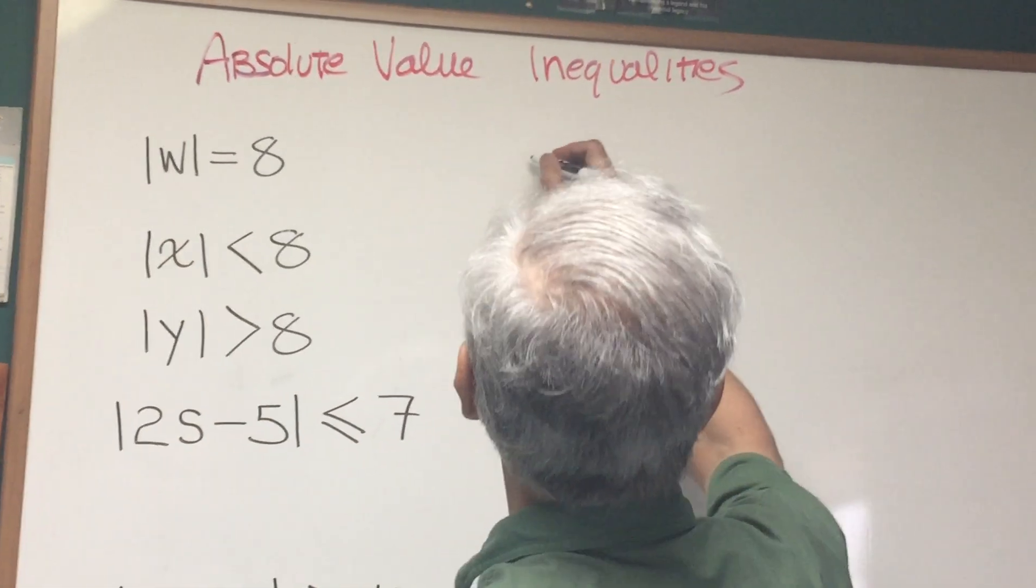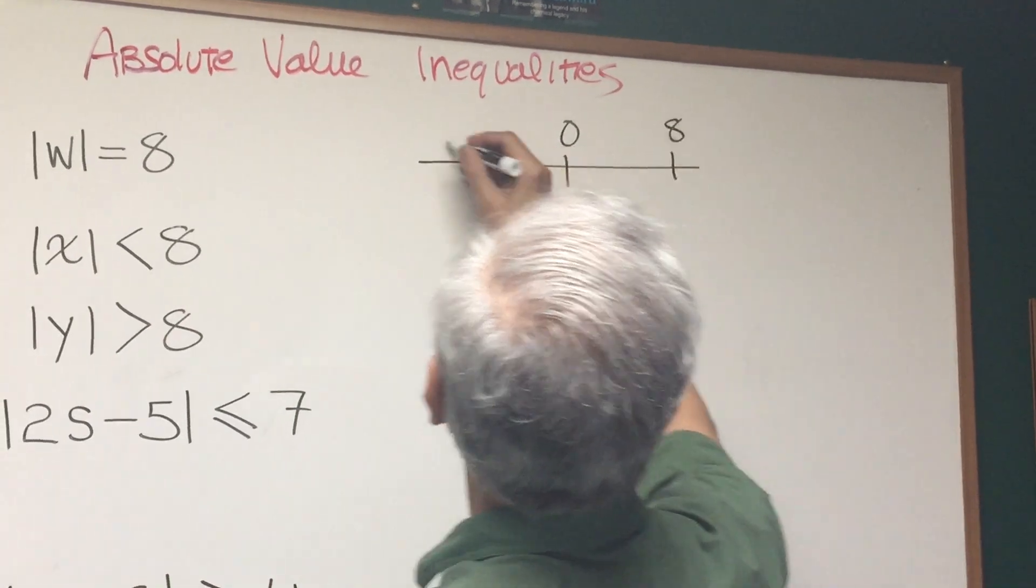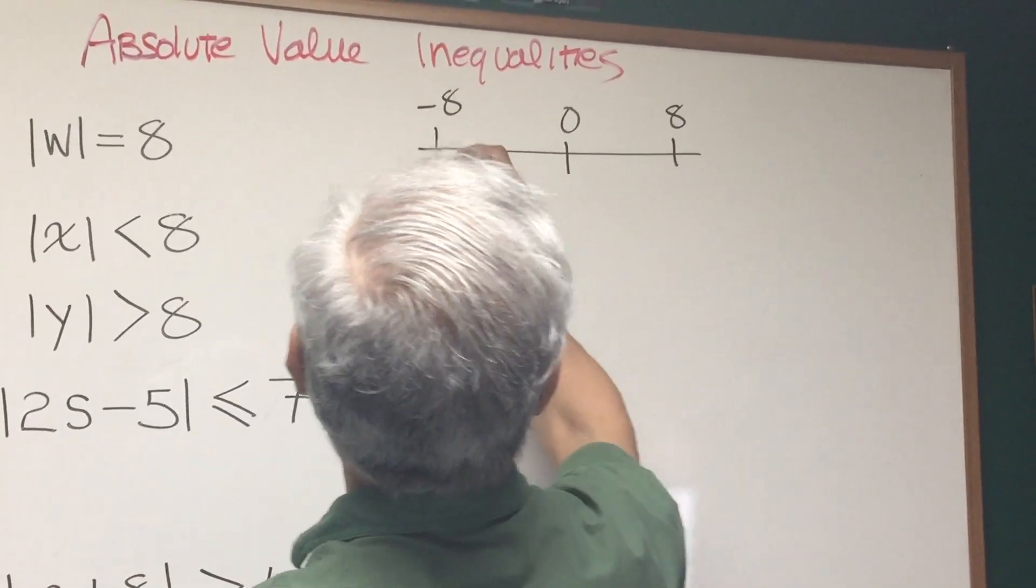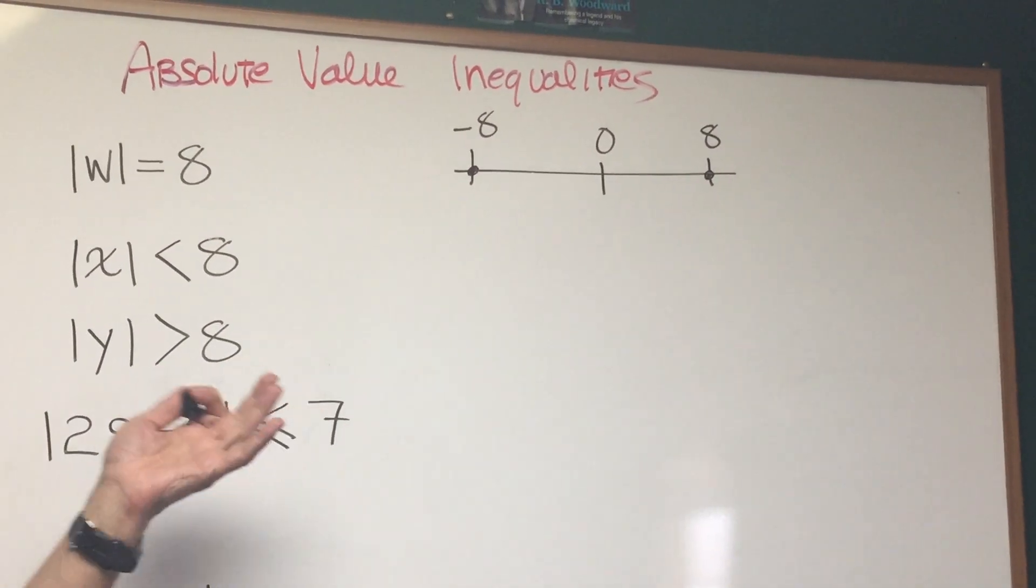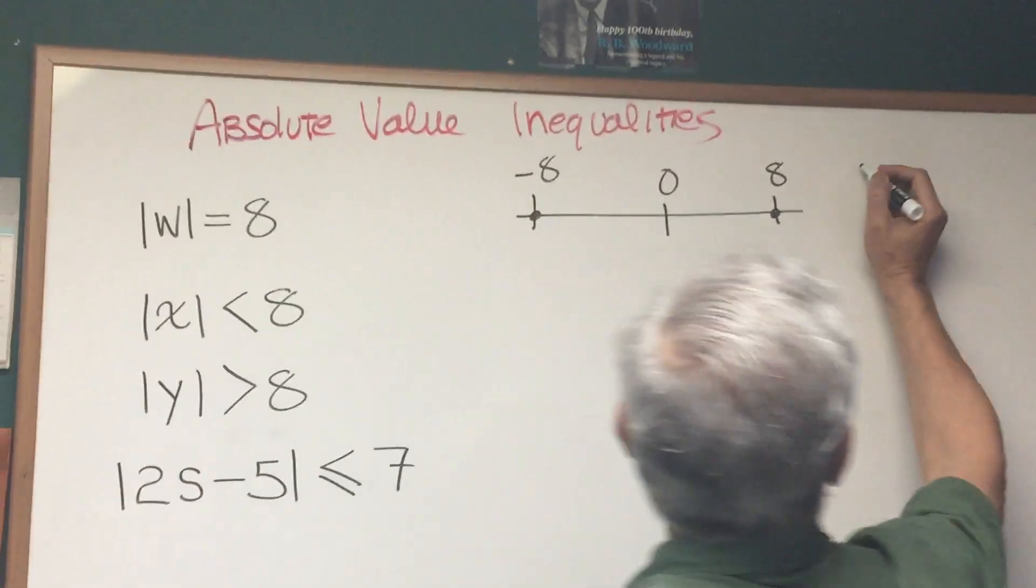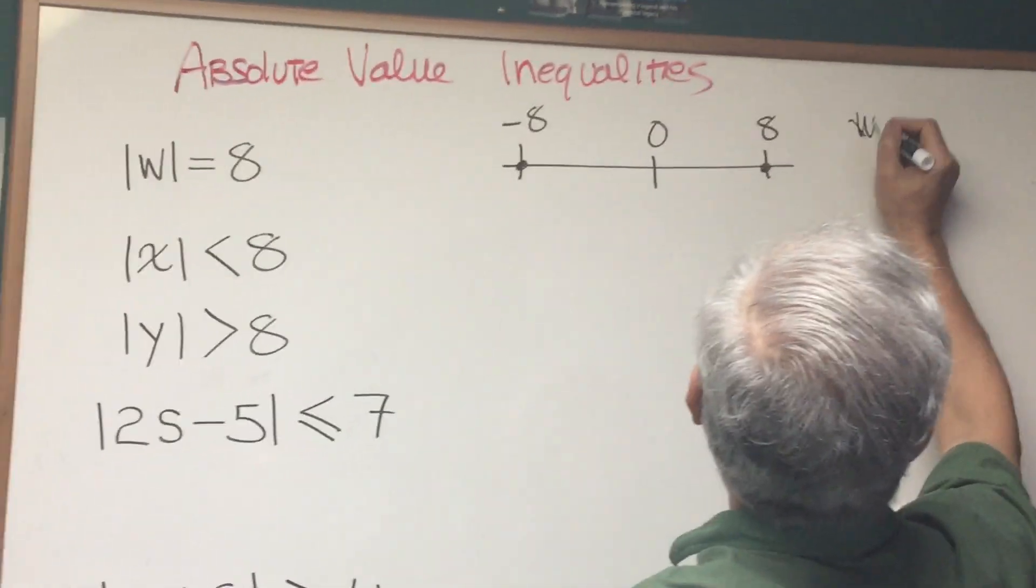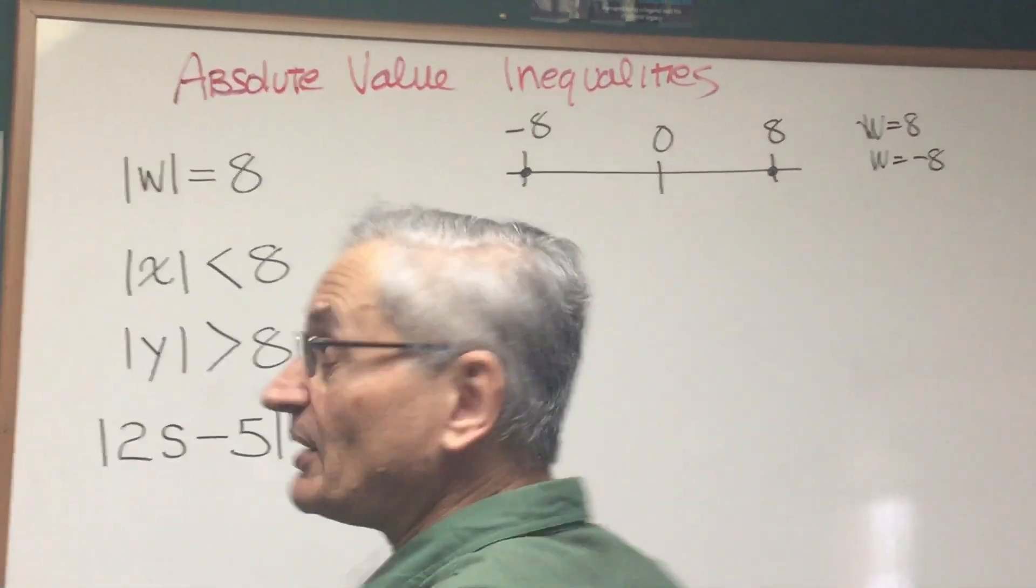Now, because it's absolute value, we're going to be looking at the positive side and the negative side. So there are two values that satisfy the equation. A distance of 8 from the origin, or 0, x equals 8, sorry, W equals 8 and W equals negative 8.